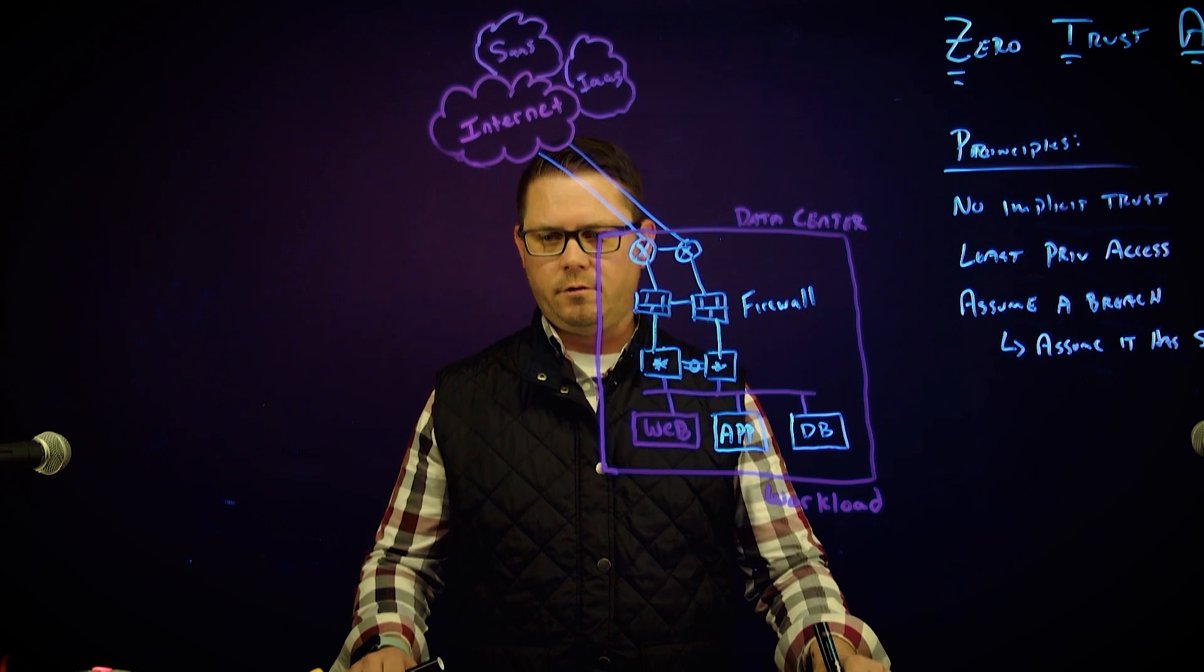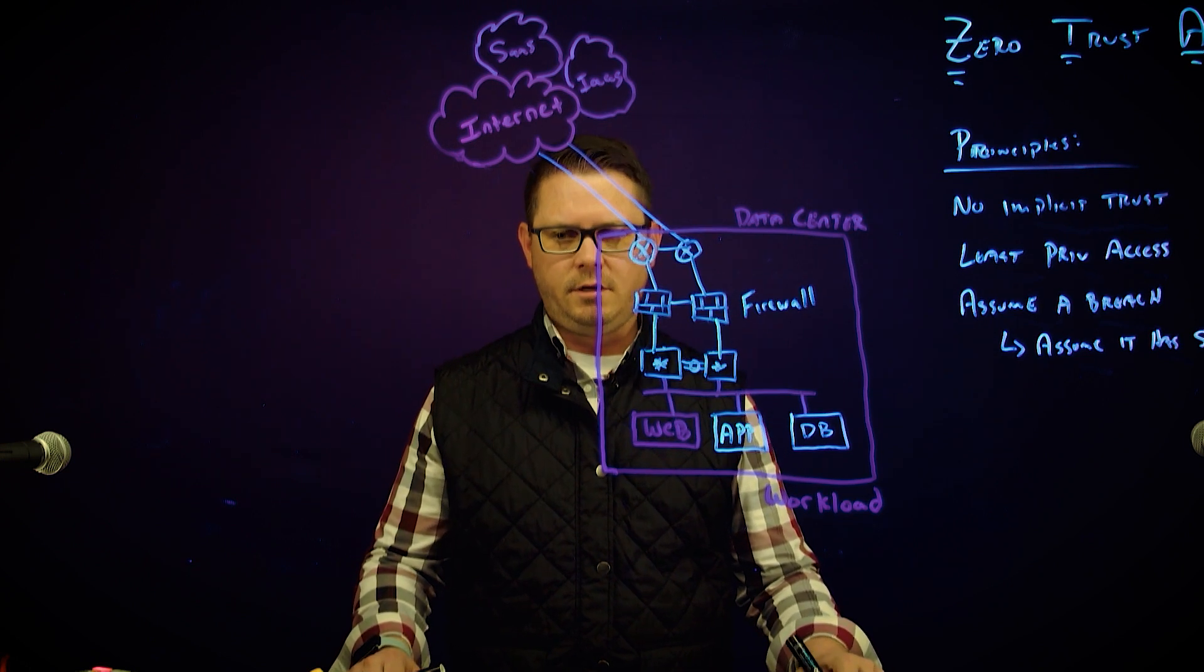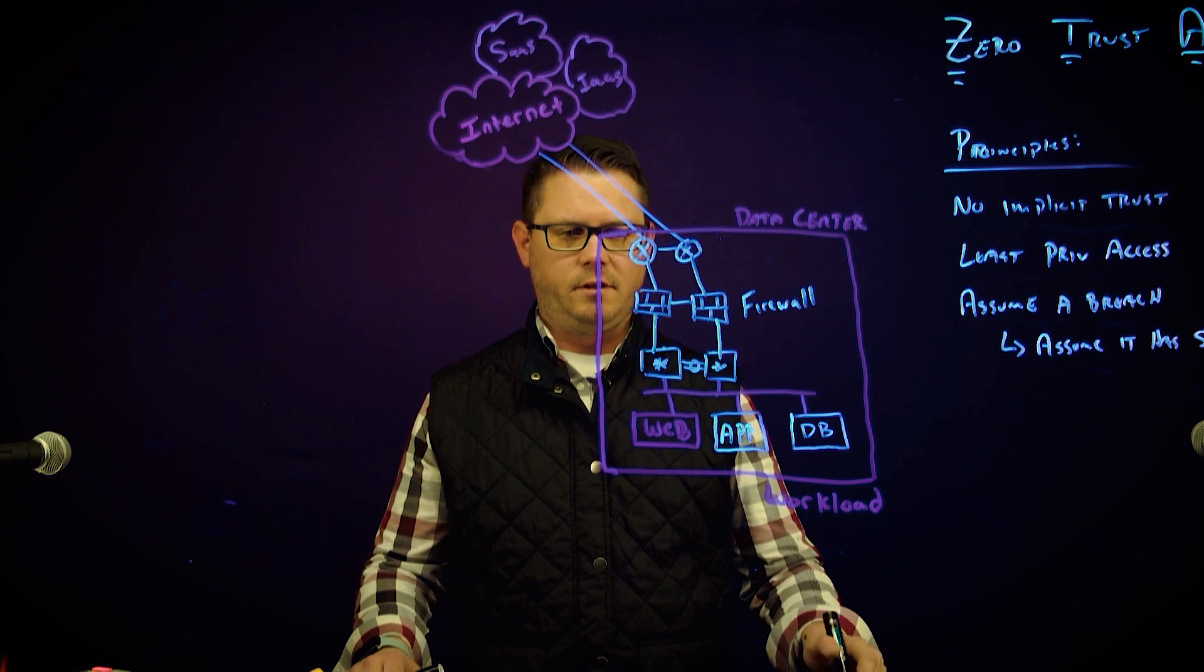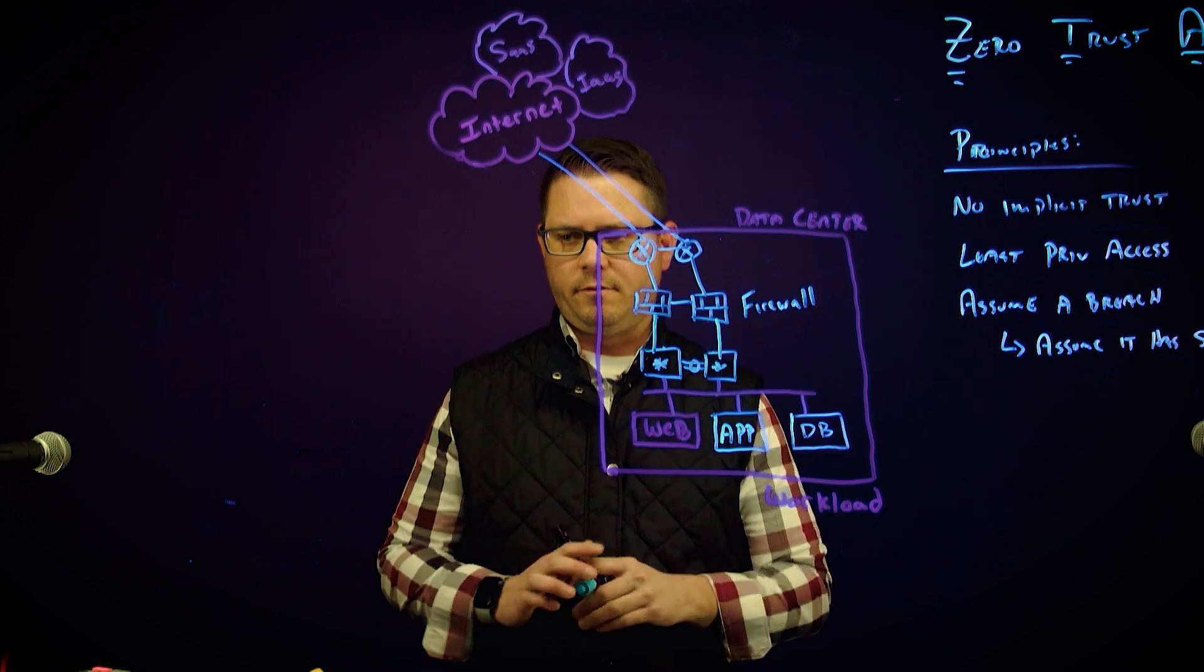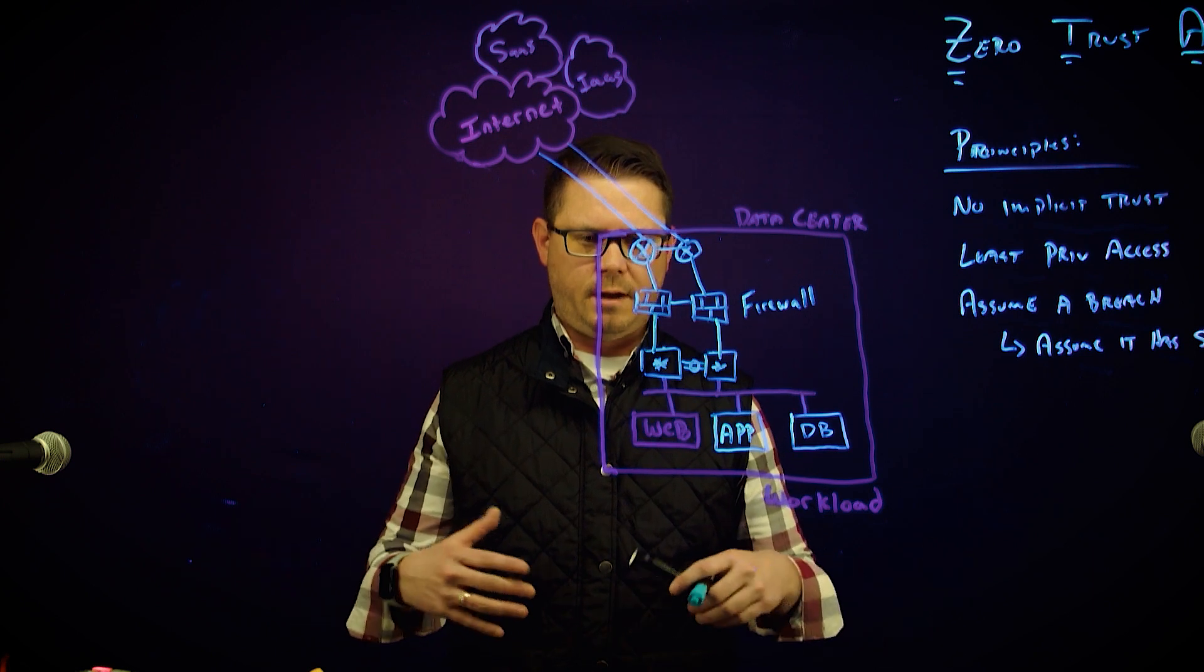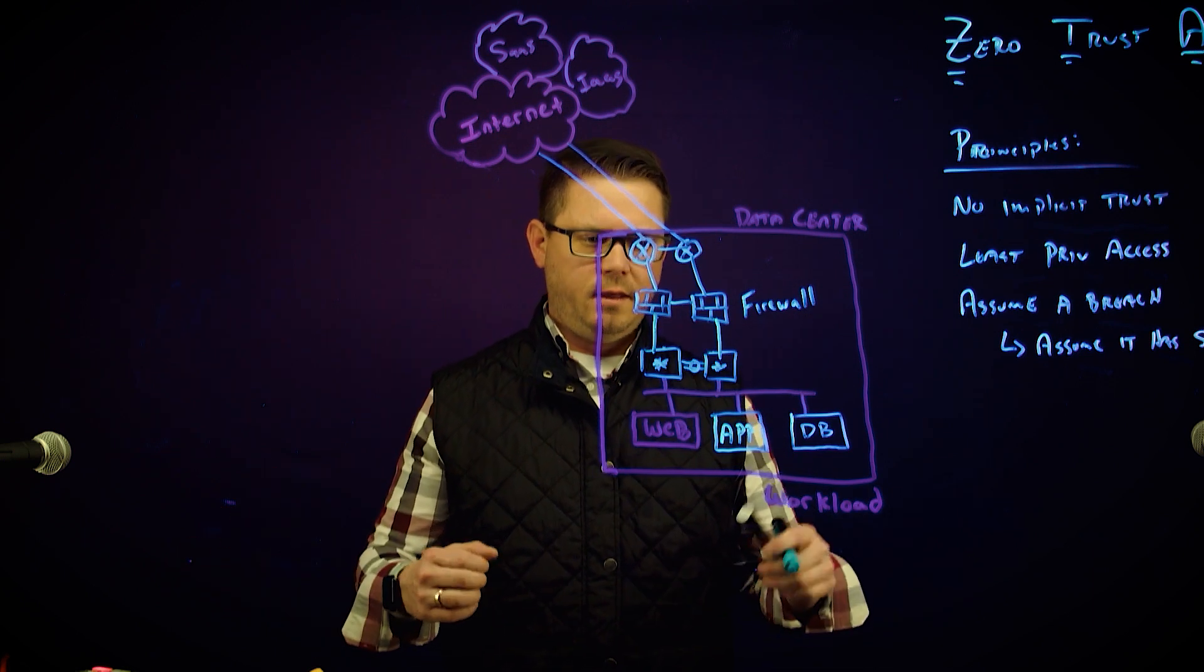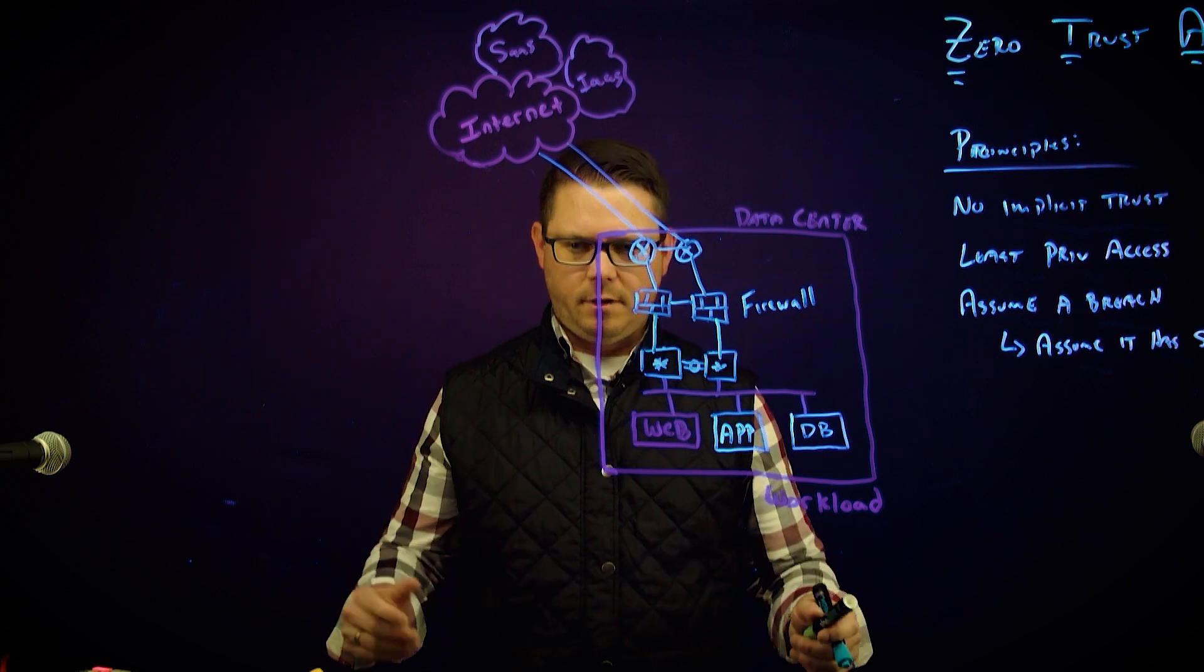We think about how we do traditional macro level segmentation. We have some hierarchy of segmentation within the data center. So we've started off, as you look here, we've got different VLANs associated for the different application tiers. Maybe web app is in one VLAN, the app tier is in another, and the database in another.